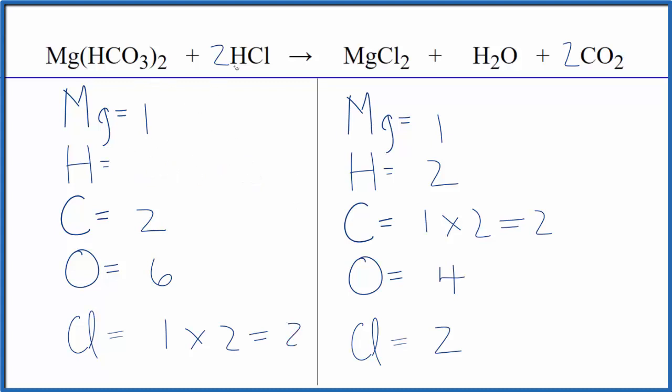So for our hydrogens, we have the two times the one already. So we have two plus this one times two here. So now we have four, which is kind of nice. That's an even number.